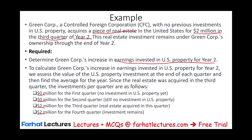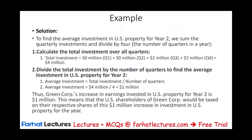Next, we find the average. We take the first quarter zero, second quarter zero, third quarter two million, fourth quarter two million — that totals four million. We divide by four quarters, giving us an average of one million. So the increase was one million. We take the quarterly amounts, sum them, and divide by the number of quarters. This means Green Corp's increase in earnings invested in the U.S. for year two is one million dollars.